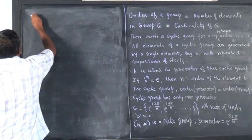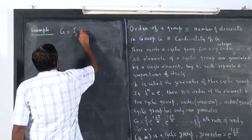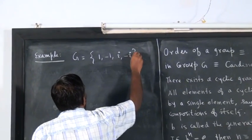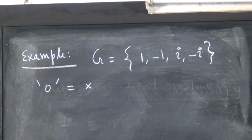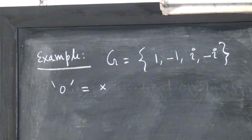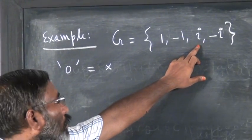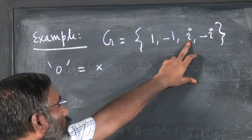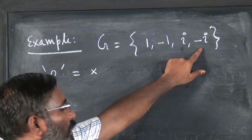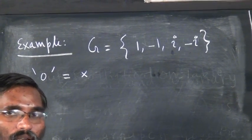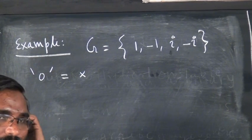Let me consider an example. G is equal to {1, -1, i, -i} and the binary composition is usual multiplication. There are 4 elements. Is this a cyclic group? i is the generator: i square is -1, i cube is -i, i power 4 is +1. So i is a generator. Can minus i also be a generator? It can also be a generator. You can choose any one of them. So this is a cyclic group.